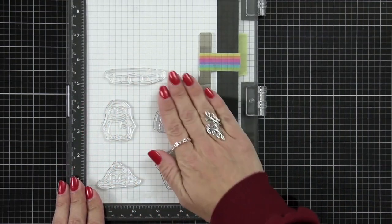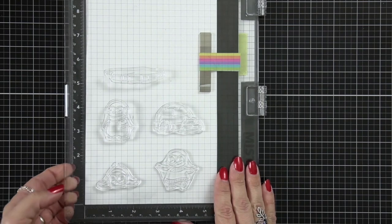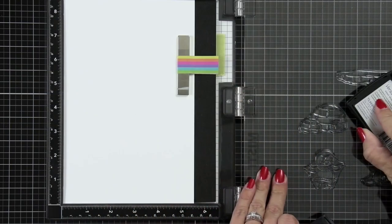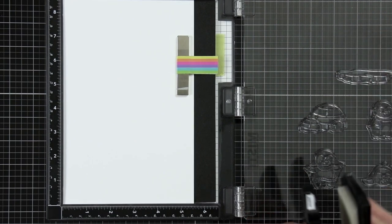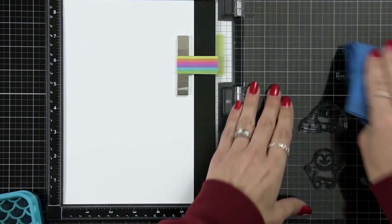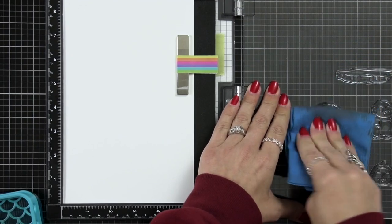I'm going to start off by stamping down my images onto 80 pound smooth white cardstock and since I haven't used this set yet I'm going to condition my stamps by just inking them up with some Versamark ink and then I'm going to wipe that off.